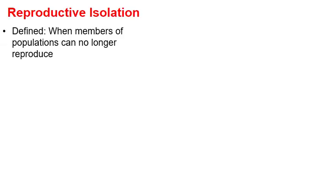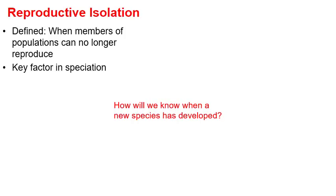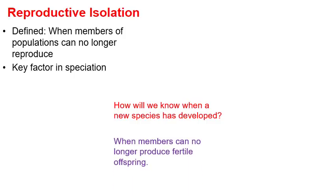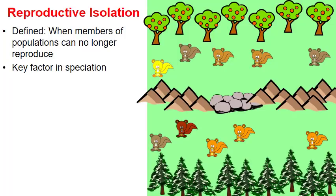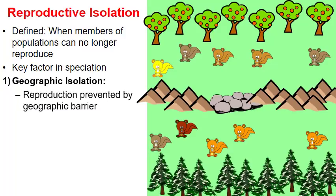Let's talk about reproductive isolation. In that previous example those squirrels were reproductively isolated — that is, members of a population can no longer reproduce with one another. This is considered a key factor in speciation. Remember: we'll know a new species has developed when members can no longer produce fertile offspring. Our squirrels are now geographically isolated, one type of reproductive isolation where reproduction is prevented by a geographic barrier, so squirrels on top can only reproduce with others on top, and squirrels on the bottom can only reproduce with others in their environment.